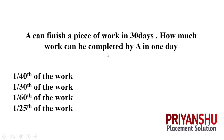The first question is: A can finish a piece of work in 30 days. How much work can be completed by A in a single day? Obviously, one by 30 is the correct answer — one-thirtieth of the work. So option B is correct.